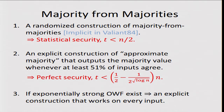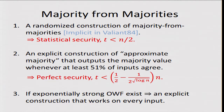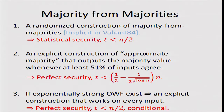We also show a full derandomization of Valiant's formula using derandomization assumptions. One way to state this is that if exponentially strong one-way functions exist, then we can derandomize Valiant's formula and obtain an explicit construction that works on every input. This gives perfect security and the optimal threshold, but it's a conditional result.